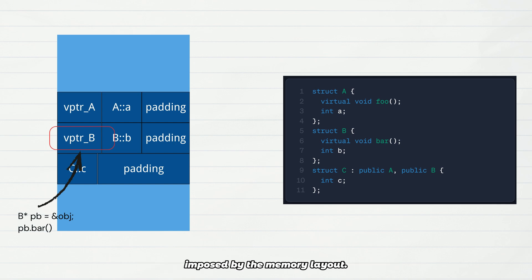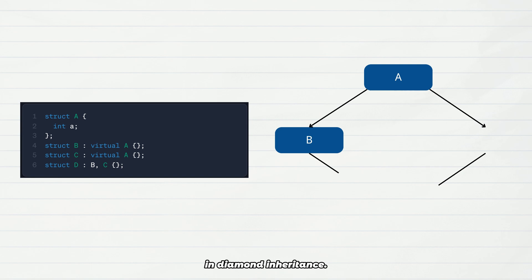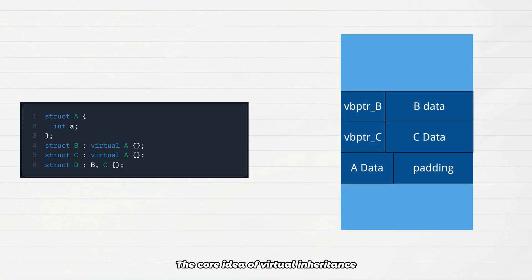Let's take it one step further: virtual inheritance. This is the solution to the redundancy problem in diamond inheritance. The problem with diamond inheritance is that the base class A is duplicated in the derived class. The core idea of virtual inheritance is to ensure that only one instance of A exists in class D. However, this duplication comes at a cost: the object layout of D undergoes a significant change.